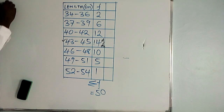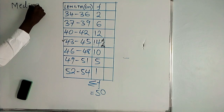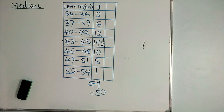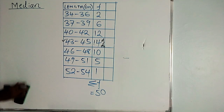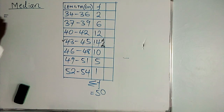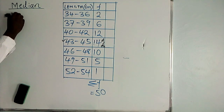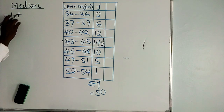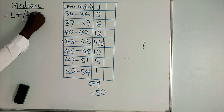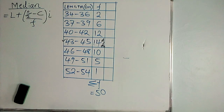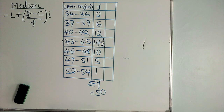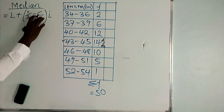Now let's go to the second part — finding the median. The formula for the median is: lower class limit of the median class plus (n/2 minus c) over f, multiplied by i. Here, l is the lower class limit of the median class, n/2 is the halfway point, and c is the cumulative frequency of the class above the median class.